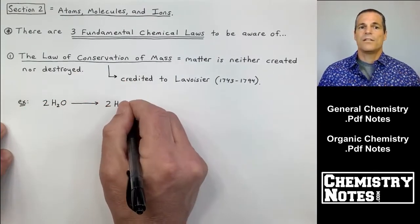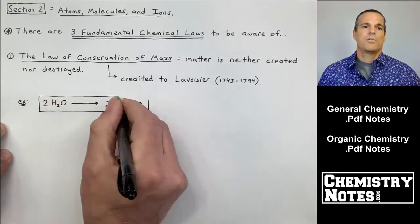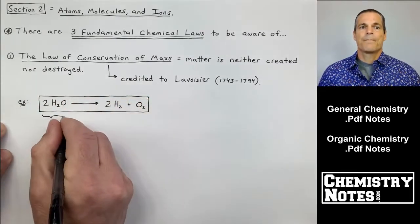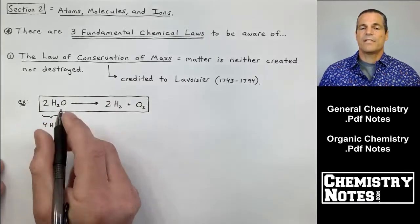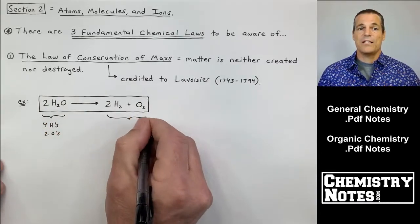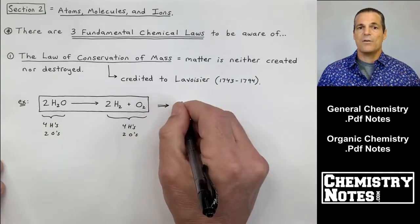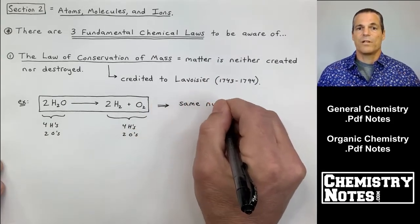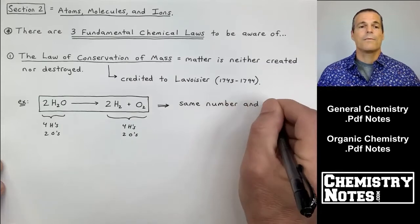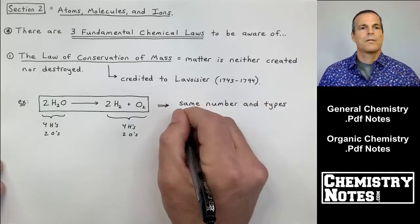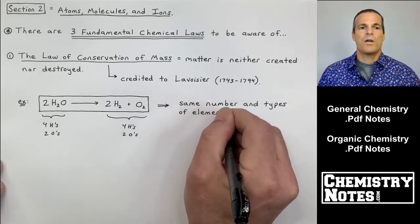Number one is the law of conservation of mass. And I'm drawing a sample down here. Law of conservation of mass states that matter is neither created nor destroyed. This is credited to Lavoisier, who was around from 1743 to 1794, in case you were wondering. So I put a box around this equation.